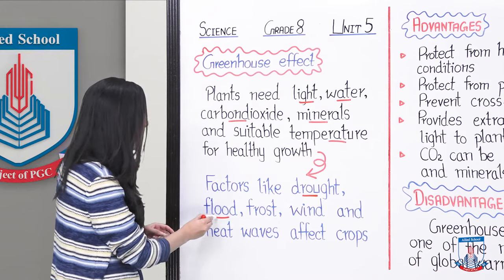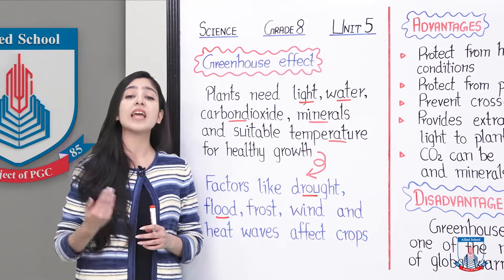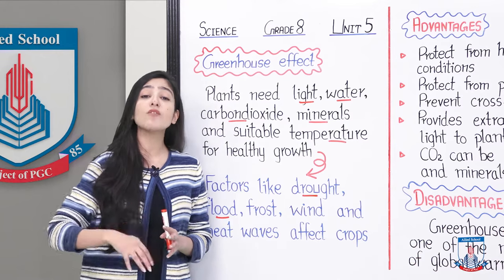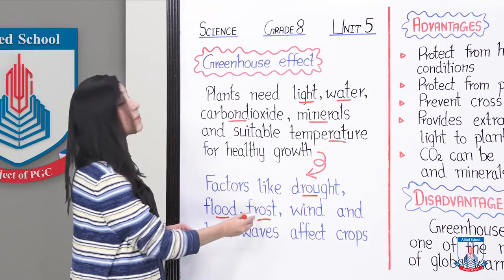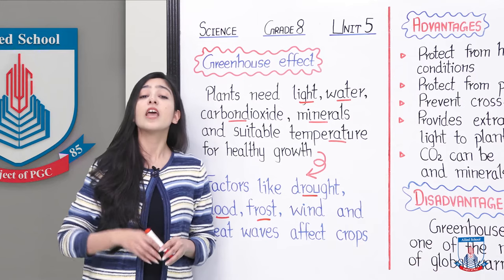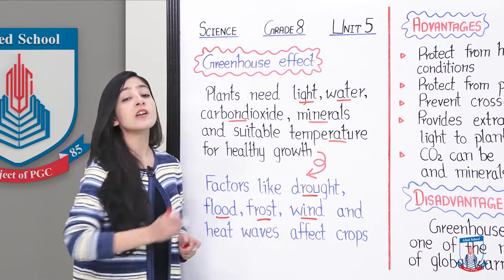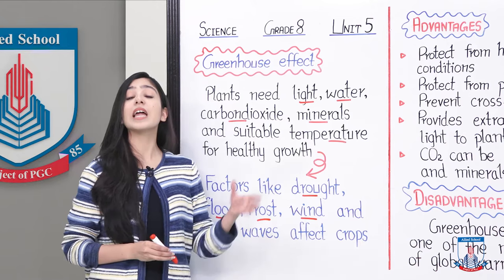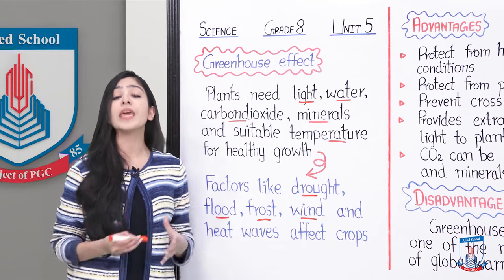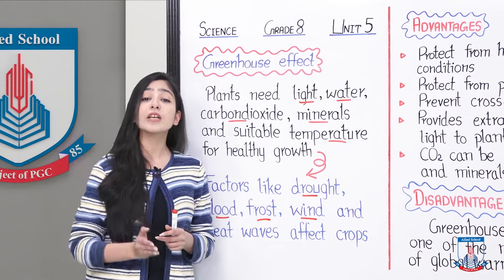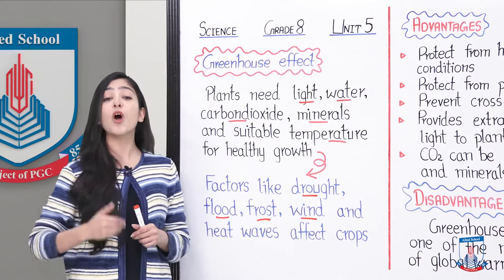When floods come in some areas, plants get damaged — the roots are affected and they can't survive. Then there is frost: in very cold conditions, our plants can't survive. Wind is also an important factor. If there is a lot of hot air, like in tornadoes or storms, plants can break from the soil.